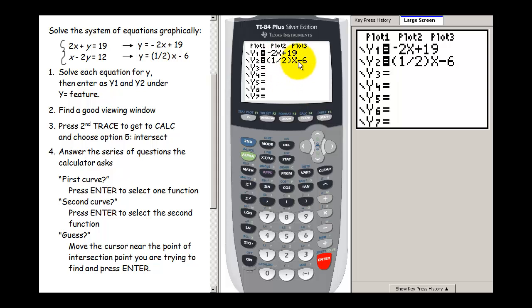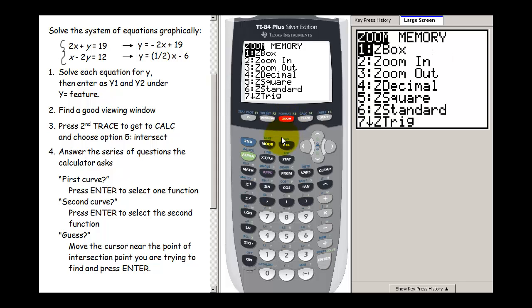Once we have our functions in our y equals screen we need to choose a window. Let's go ahead and try choosing the window by pressing, using one of our preset windows and doing, let's try zoom standard this time. So let's zoom 6.